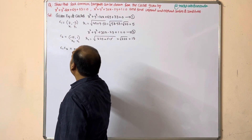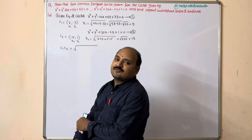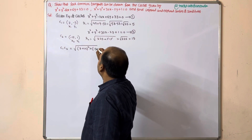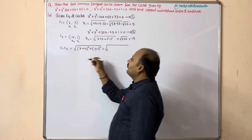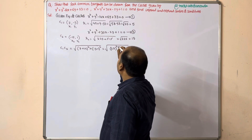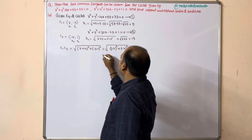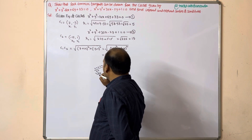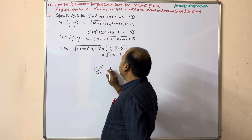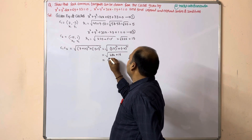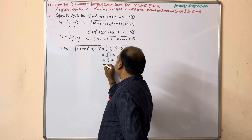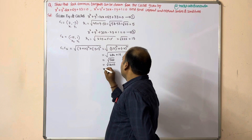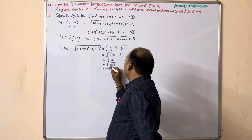Now calculate the distance between C1 and C2. C1C2 = √[(7 − (−15))² + (−3 − 1)²] = √[(22)² + (−4)²] = √(484 + 16) = √500 = √(100 × 5) = 10√5.